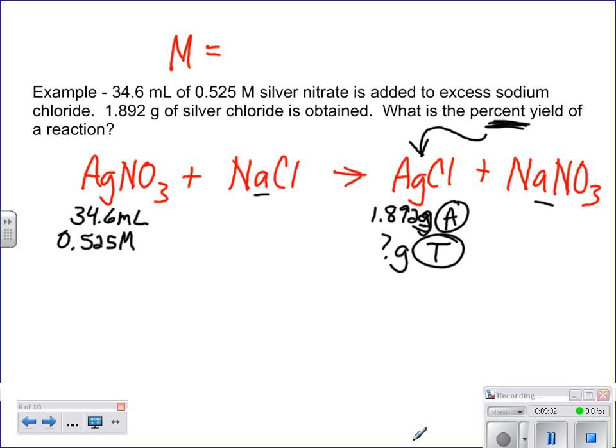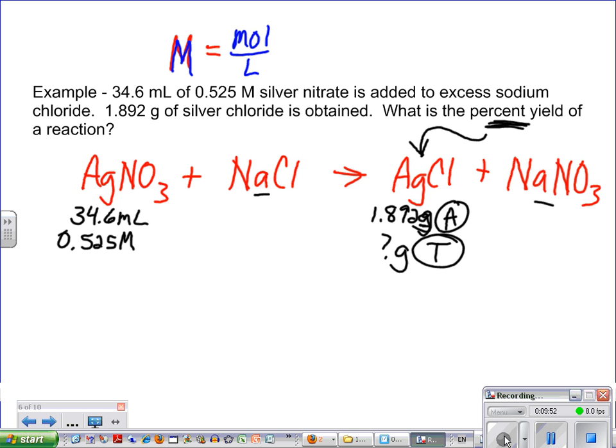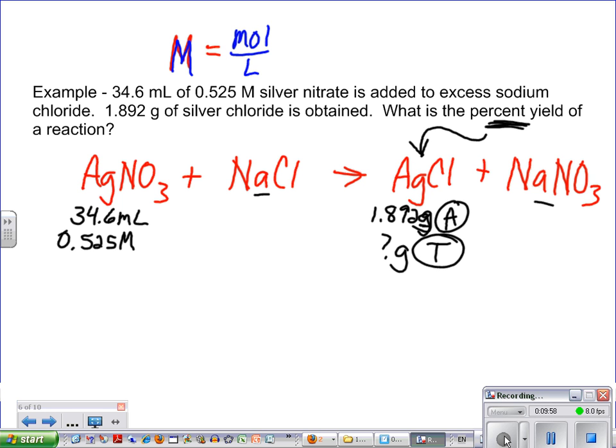If you remember the formula for molarity, it'll probably help you out because we never really want to have the big capital M in our dimensional analysis because nothing will ever cancel. Instead, we want it as moles per liter. So I see I'm given 0.525 molar. We've got molarity, which we're going to say moles per liter. Then we've also got milliliters, which we can easily convert to liters. I wouldn't necessarily write this all underneath like I'm doing.